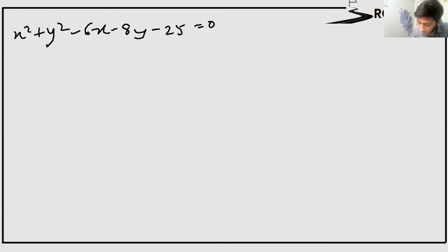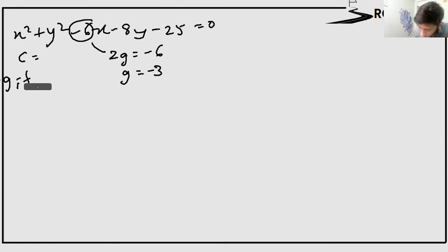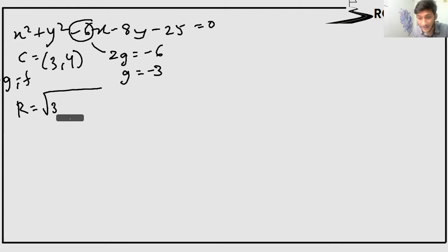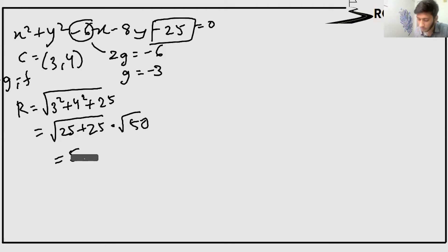Looking at the center coordinates: 2g equals minus 6, so g equals minus 3; 2f equals minus 8, so f equals minus 4. The center is at (3, 4). For the radius, we compute under root of g² plus f² minus c, which gives under root of 9 plus 25 plus 25, giving under root 50, which equals 5 root 2.